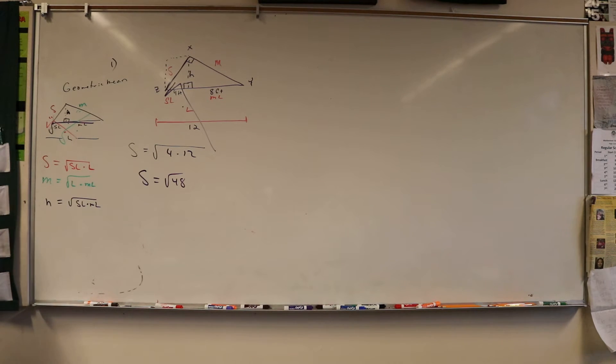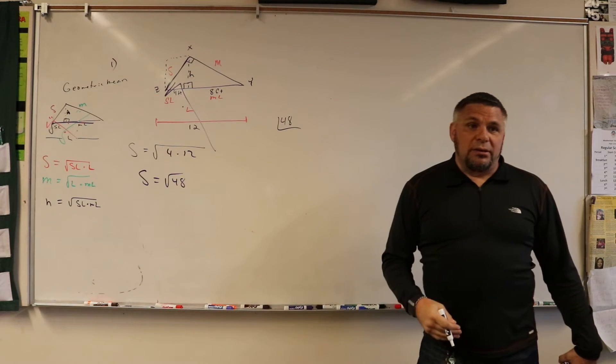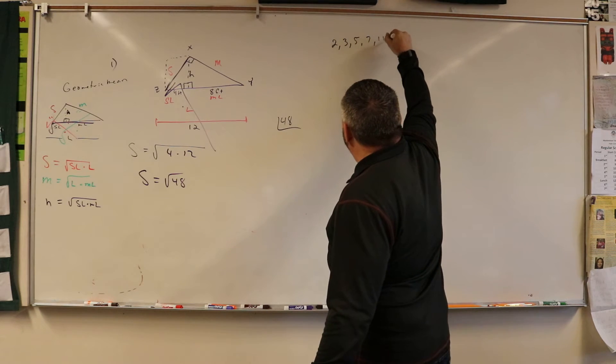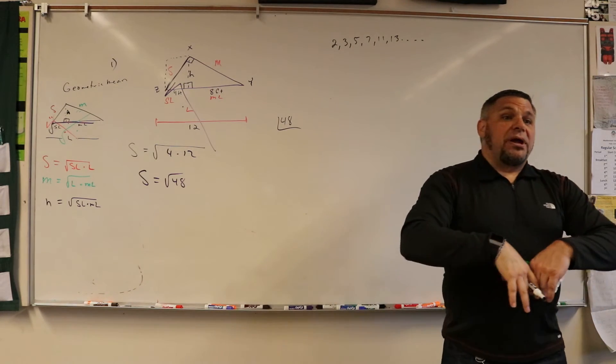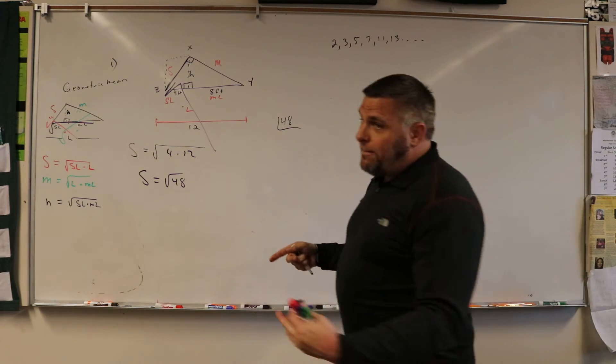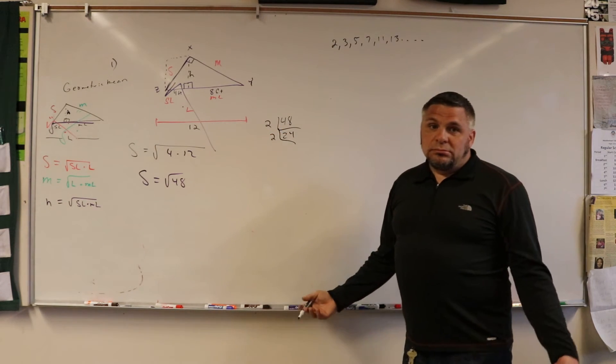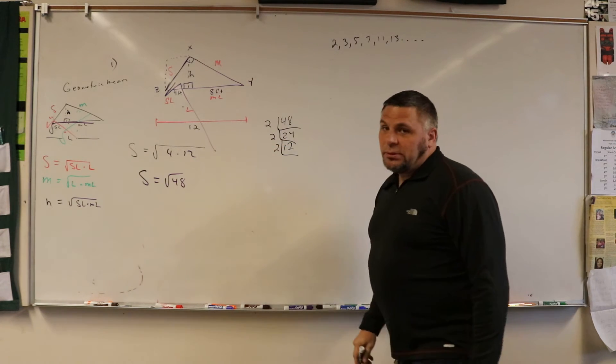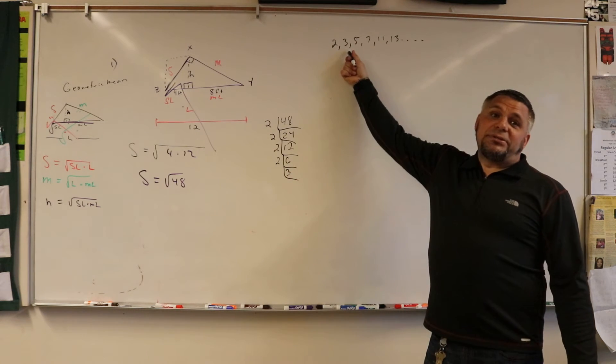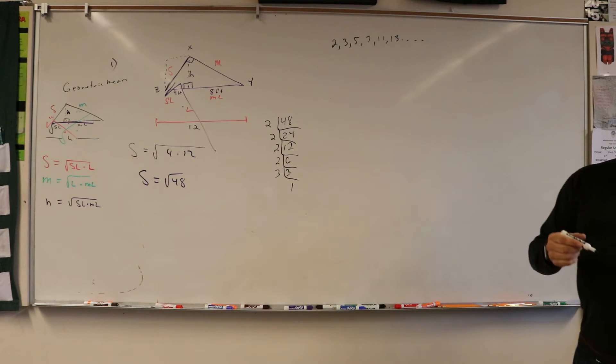Now we got to break down 48. Remember how to break it down? What goes into 48? Start out with twos, remember 2, 3, 5, 7, 11, 13 and so forth. We're going to take out our pairs, so we're taking the smallest that goes into it. So 2 goes in here 24 times, 2, 12, 2, 2, 2. Then go to the next one which is 3, and when you get to 1 you're done.